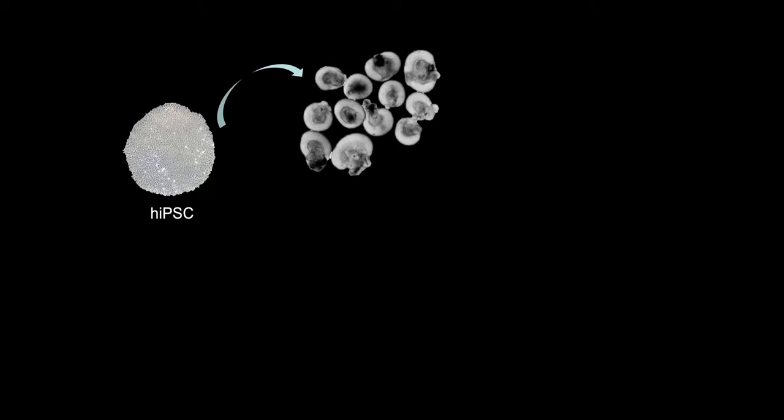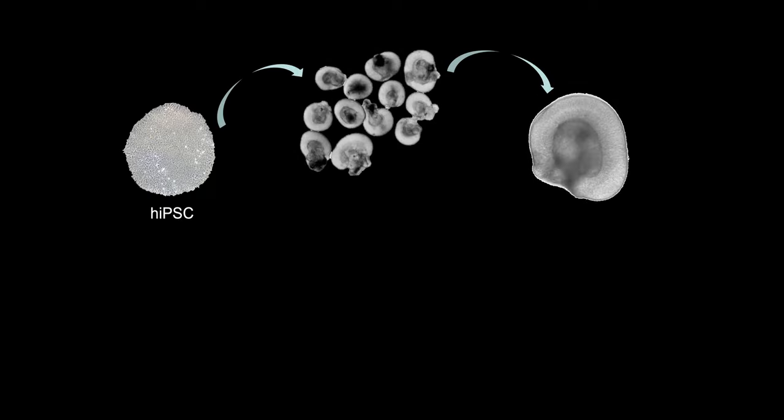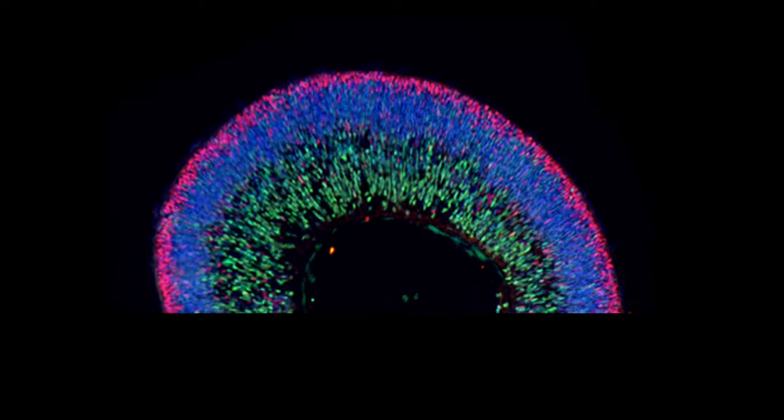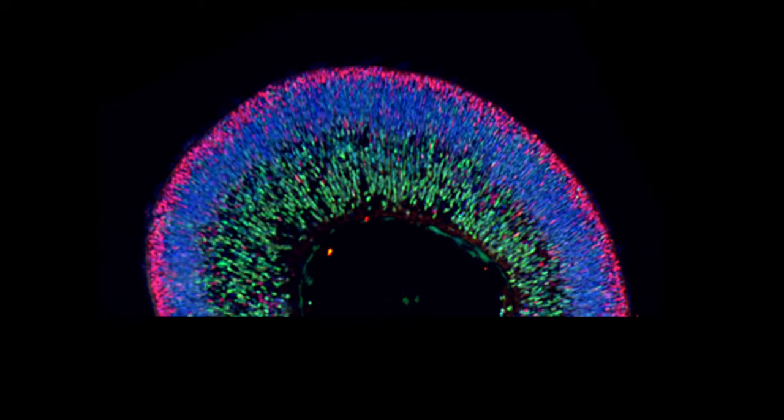Using these induced pluripotent stem cells and knowledge of eye development, we can generate hundreds of laminated human retinal organoids which recreate the cellular composition, organization, and growth timing of the native neural retina. Our retinal organoids generate all major cell types.